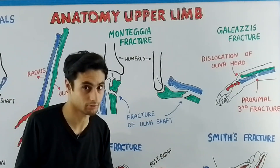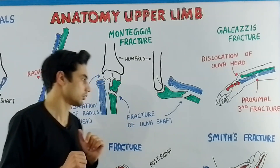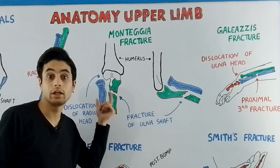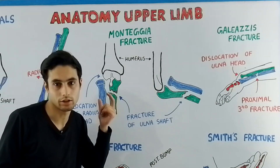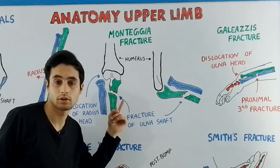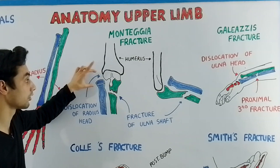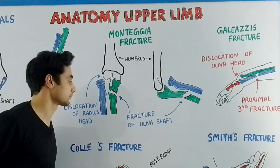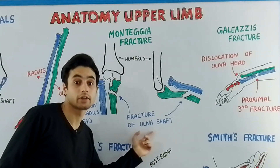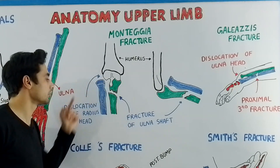Now let's talk about the Monteggia and Galeazzi fractures. These follow a condition where when one bone is broken, the other bone is dislocated — in other words, the fracture of one bone is associated with the dislocation of the other. Have a look: there is a fracture of the ulna shaft or ulna body, and the head of the radius bone is dislocated from the elbow joint.